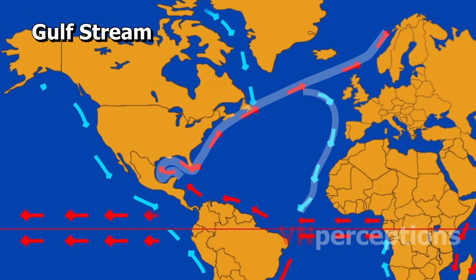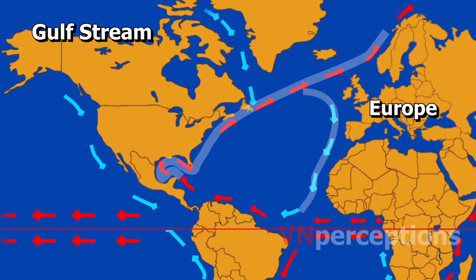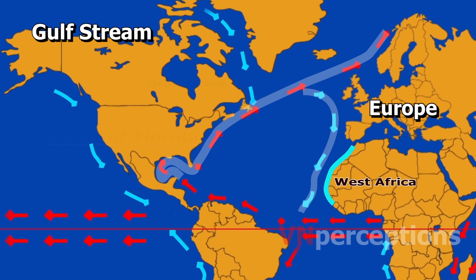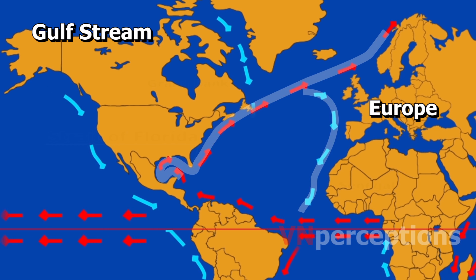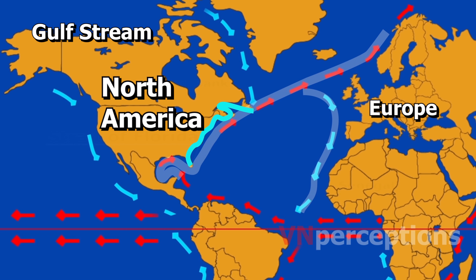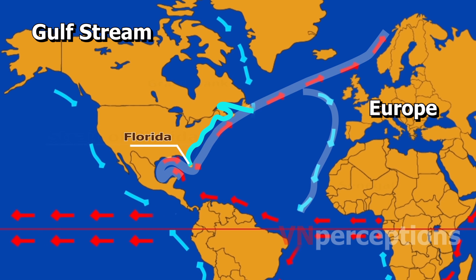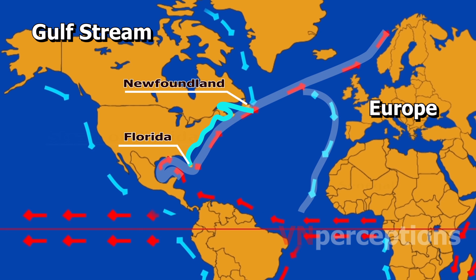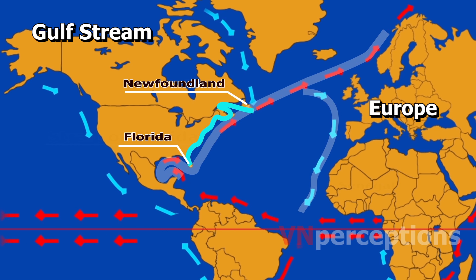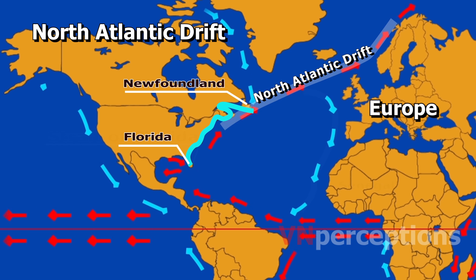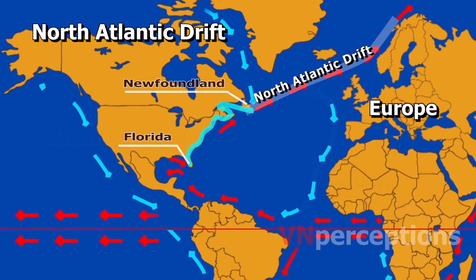At about 30 degrees west and 40 degrees north, the Gulf Stream splits in two, with the northern stream crossing to northern Europe and the southern stream recirculating off West Africa. The Gulf Stream influences the climate of the east coast of North America from Florida to Newfoundland. In fact, the climate of Western Europe and northern Europe is warmer than it would otherwise be, due to the North Atlantic Drift, one of the branches from the tail of the Gulf Stream.